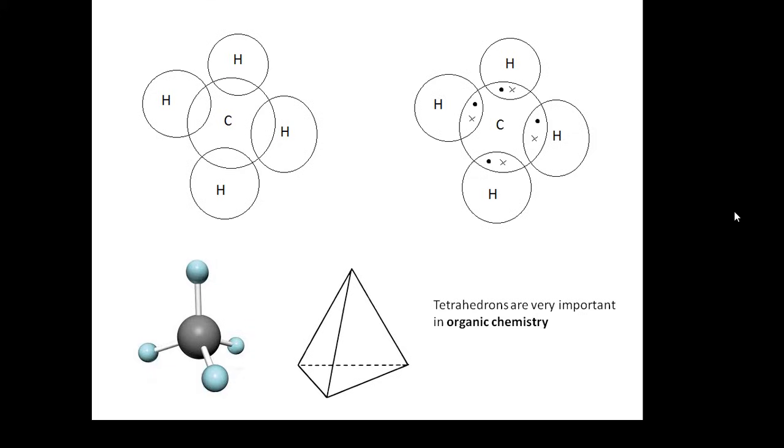This is important because the shape of it is called a tetrahedron. And in organic chemistry, tetrahedrons are important. Organic is basically with carbon, hydrogen and oxygen. Tetrahedron. CH4 is a tetrahedron.